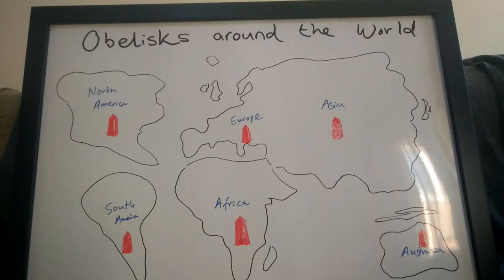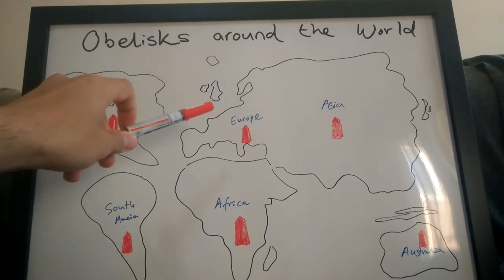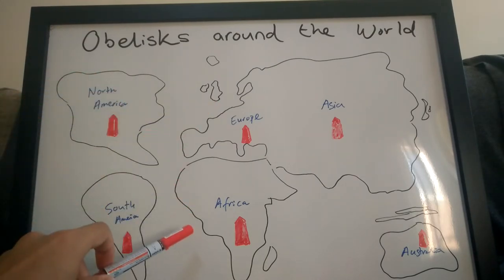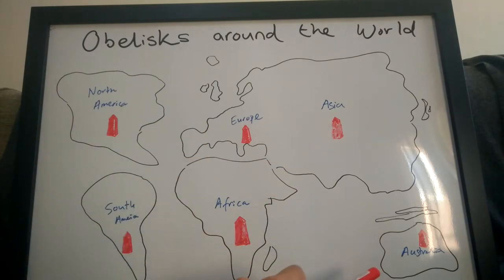This is a simplified world map — North America, South America, Europe, Africa, Asia and Australia.